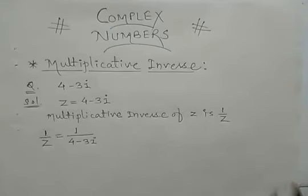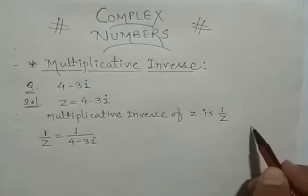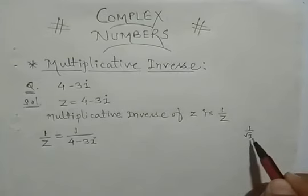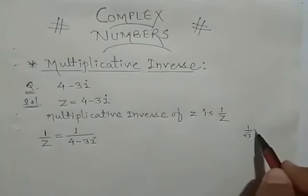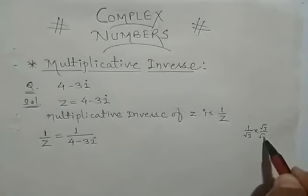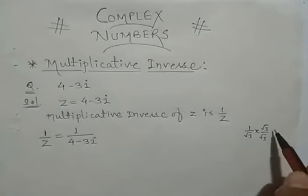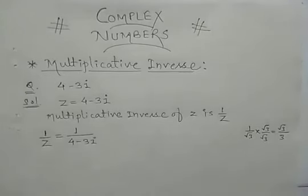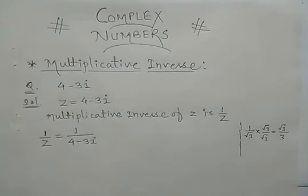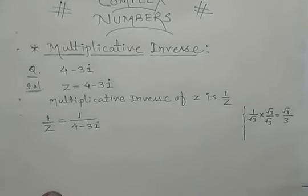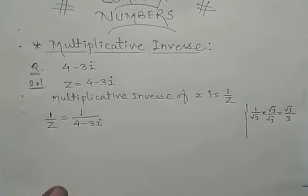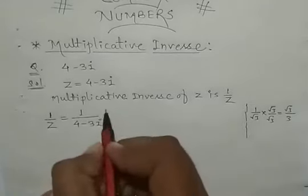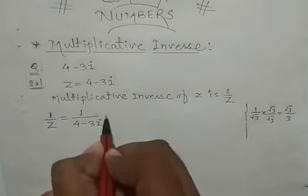Just as you would remember, when you solve a root expression like 1 by root 3 in standard form, you would multiply and divide by root 3 to bring root 3 to the numerator and get root 9 in the denominator. In the same way, here you should not keep iota in the denominator, so you need to rationalize it.